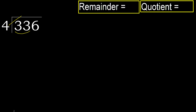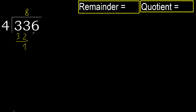4 — multiply by which number is nearest to 33 but not greater. 4 multiplied by 9 is 36, which is greater. Multiply by 8: 32 is not greater. Subtract: 33 minus 32 is 1.